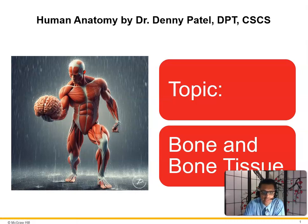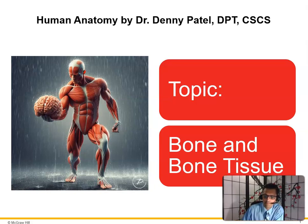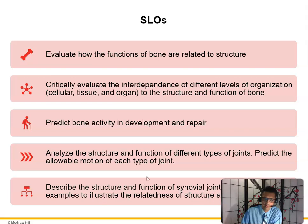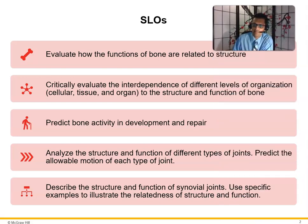We are going to do a topic on bones and bone tissue — usually chapter six, but that varies by book. Some student learning objectives: evaluate how the functions of bones are related to structure; critically evaluate the interdependence of different levels of organization — cellular, tissue, and organs; predict bone activity and development and repair; analyze the structure and function of different types of joints.